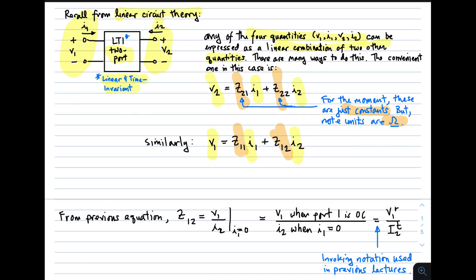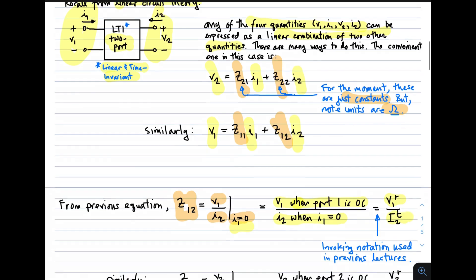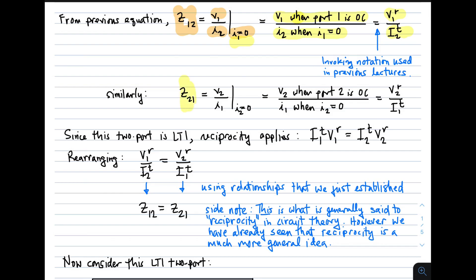Z sub 12 can be defined as V sub 1 divided by I sub 2 in the special case where I sub 1 equals 0 — that is, when port 1 is open-circuited. In notation used in previous lectures, the numerator is written as V sub 1 superscript R, and the denominator as I sub 2 superscript T. Similarly, Z sub 21 is defined as V sub 2 over I sub 1 when I sub 2 equals 0 — port 2 open-circuited — which in previous notation is V sub 2 superscript R divided by I sub 1 superscript T.